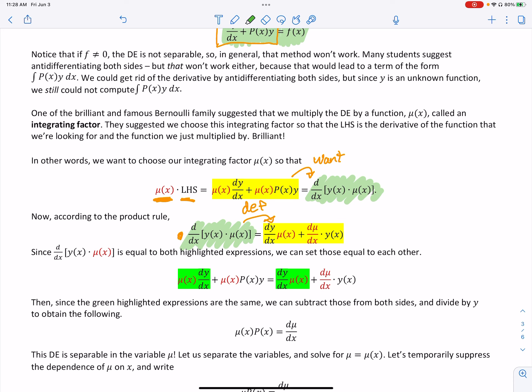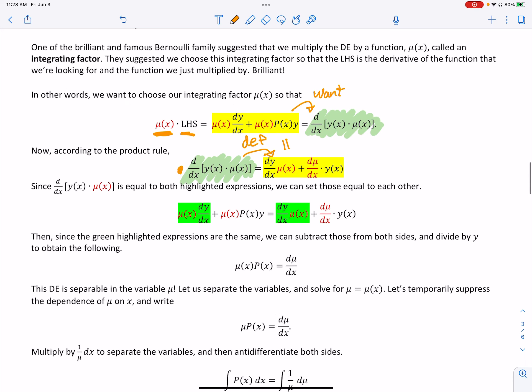Now, since those are true, then equal to the product rule, then we know those two equations are equal. So this line is those two highlighted parts together. Now, taking those two highlighted parts, if you notice the green portion, those are exactly the same. So we can subtract them out, leading us down here.